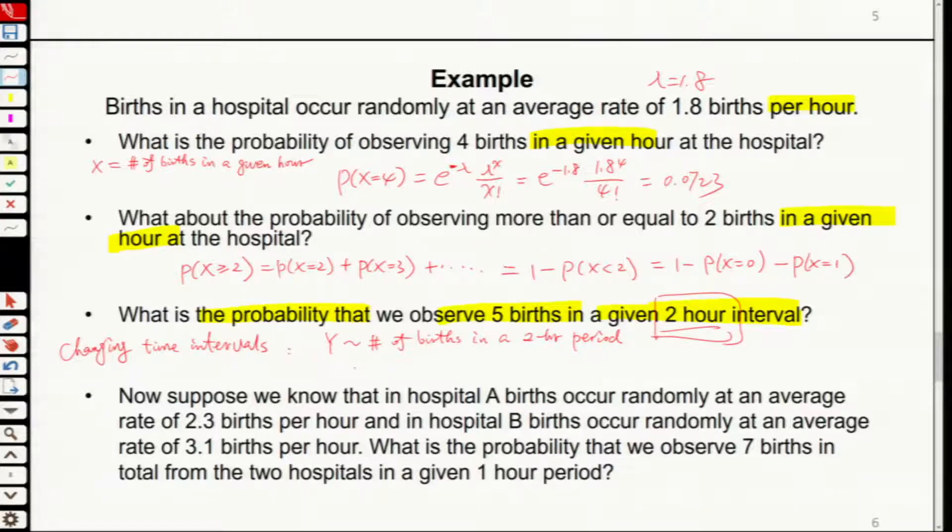So Y is Poisson 1.8 times 2. Because Poisson distribution is homogeneous, you multiply by 2.